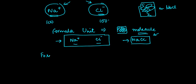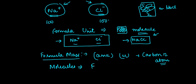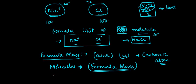A related concept is that of formula mass. We studied molecular mass earlier, which is calculated in atomic mass units with respect to a carbon-12 atom. In the case of ionic compounds, molecules are not present, so we don't use the term molecular mass. Instead, we use formula mass, which is the relative mass of a formula unit compared to a carbon-12 atom.